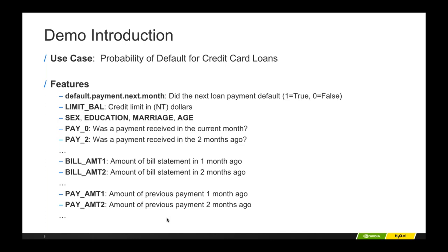The input features include gender, education, marital status, and age. There are also sets of variables — pay, bill amount, and pay amount — followed by a number indicating how many months back from the current month. So pay zero is the payment received in the current month, whereas pay two was the payment received two months ago. Same thing for bill amount one, bill amount two, pay amount one, pay amount two.